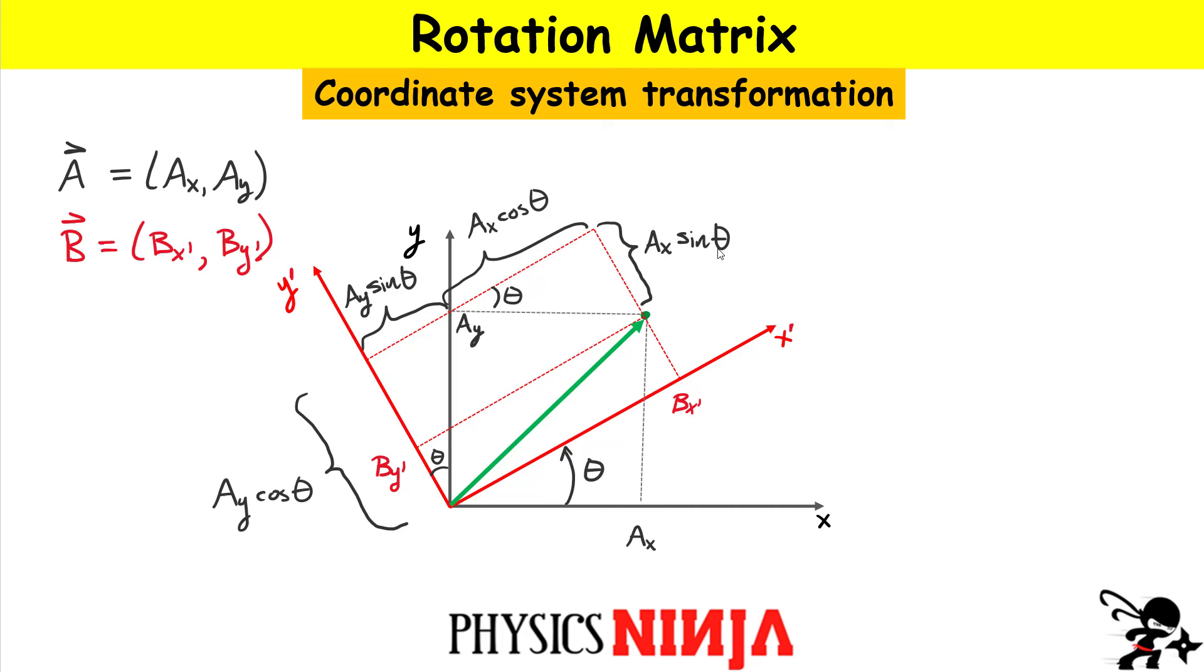Okay, so now we can start writing things out. So we're going to write down our X component, BX prime. BX prime is this total length right here, which I've repeated at the top of that rectangle. That is the total length. And you can see now you can write it in terms of the A components. So BX prime, you should be able to write as AY sine of the angle theta plus AX cos of the angle theta.